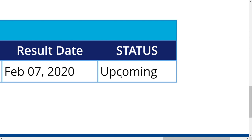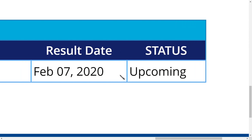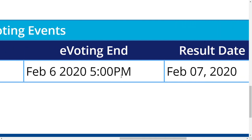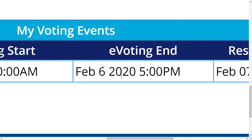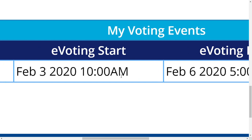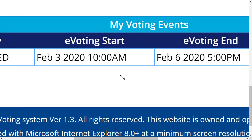The status currently shows as 'upcoming,' so tomorrow it will be live. You can click the link and give your vote — whether you want to apply or whether you don't want to apply. Once you do that, you have successfully voted, and this is how the voting process happens.